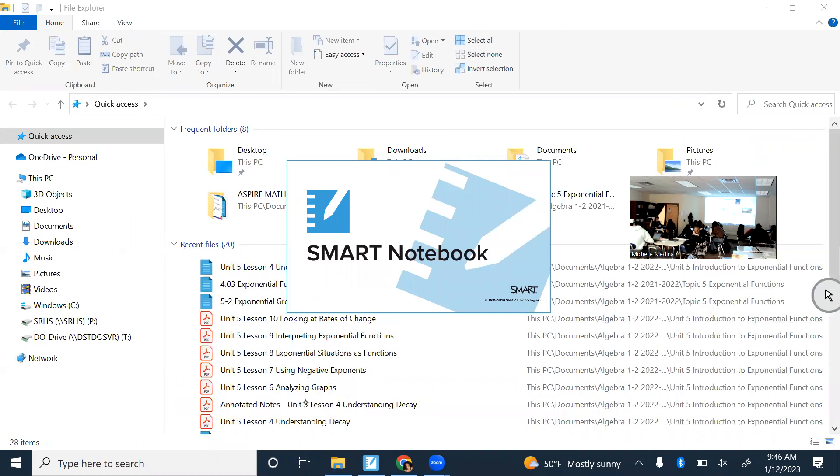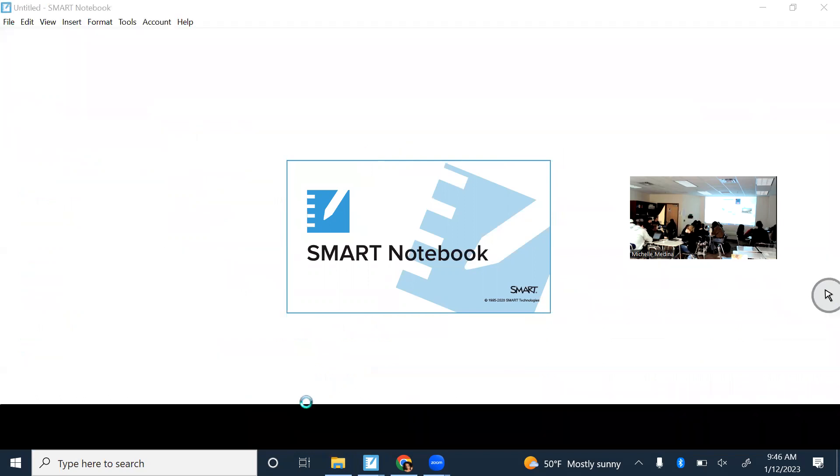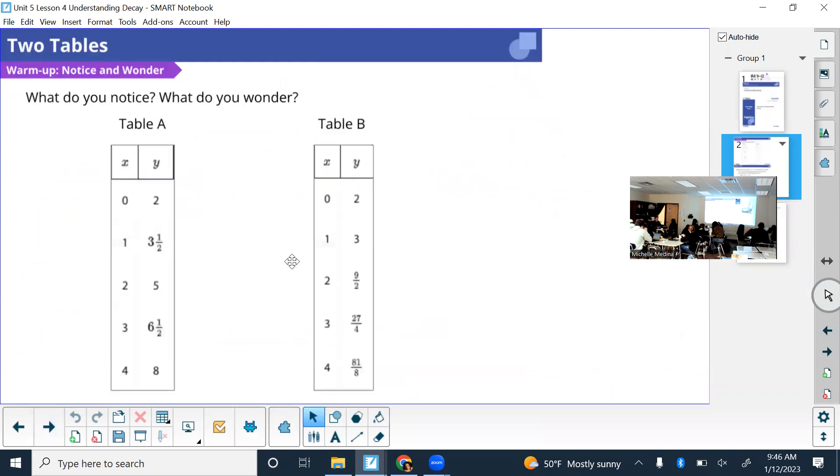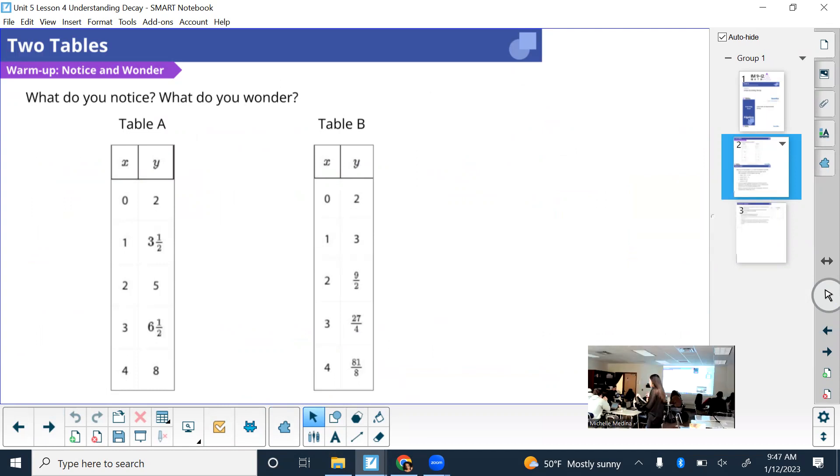The warm-up is a notice and wonder. I don't want to spend too much time. Once you look at it, probably 30 seconds of think time, and then I'll just take volunteers. Here's the notice and wonder. Look at the two tables quietly for about 30 seconds, and then I'll call for volunteers for what you notice and what you wonder.